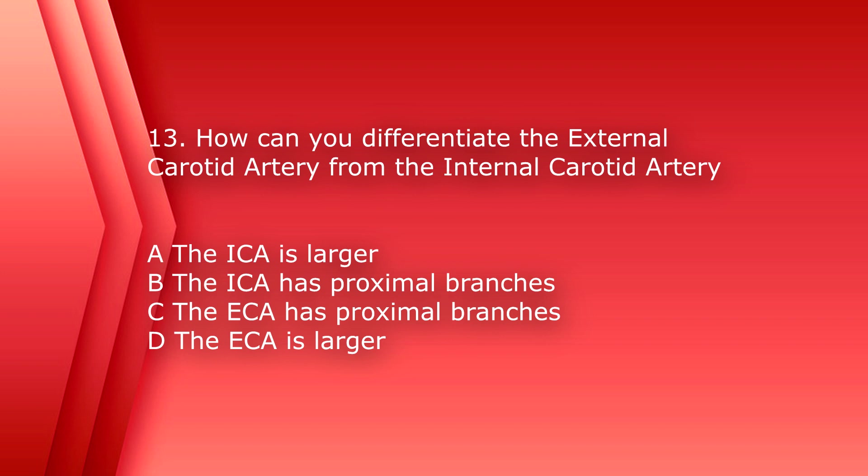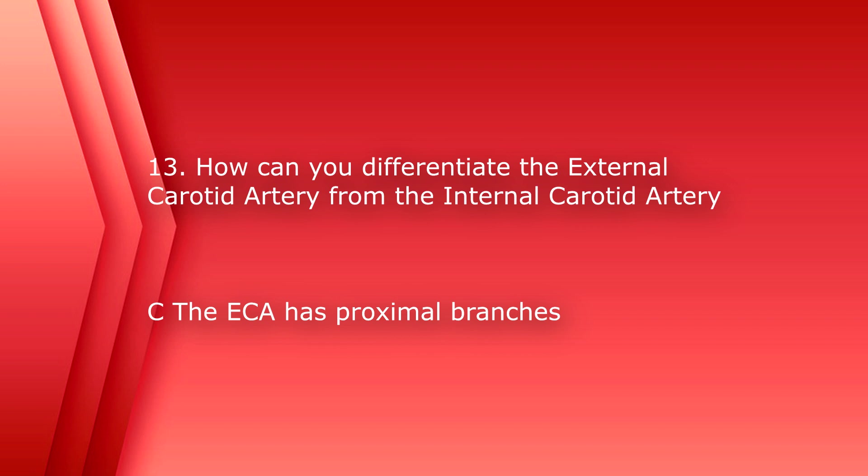Number 13. How can you differentiate the ECA, or external carotid artery, from the ICA, the internal carotid artery? A, the ICA is larger. B, the ICA has proximal branches. C, the ICA has proximal branches. D, the ICA is larger. The answer is C, the ICA has proximal branches. The ICA and ECA are usually the same size. Sometimes the ICA can be bigger than the ECA, that is not always the case though. And the ICA's first branch is the ophthalmic artery.